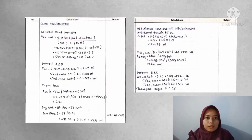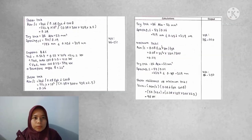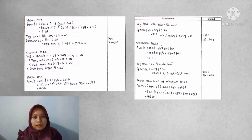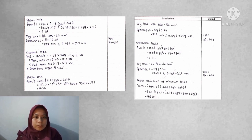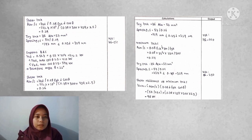Next is shear reinforcement. For supports A and B, spacing is 271 mm, less than 329 mm — we use H6-250. For support B and C, spacing is 167 mm, less than 329 mm — we use H6-150. For the next B and C zone, spacing is 219 mm, less than 329 mm — we use H6-200. For minimum length, spacing is 237.5 mm, less than 329 mm — we use H6-250.